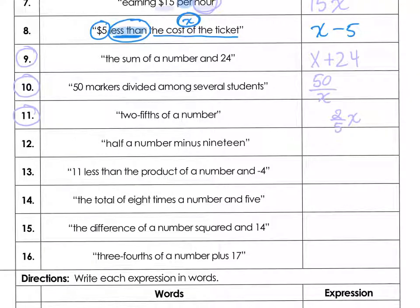Now that you've tried 9, 10, and 11, the sum of a number and 24, that's x plus 24, where our phrase is sum. 50 markers divided among several students. Divided among would indicate that the 50 is being divided by the several students. Since we don't know how many students, we call that x, 50 divided by x. And then 2 fifths of a number, 2 fifths multiplied by x.